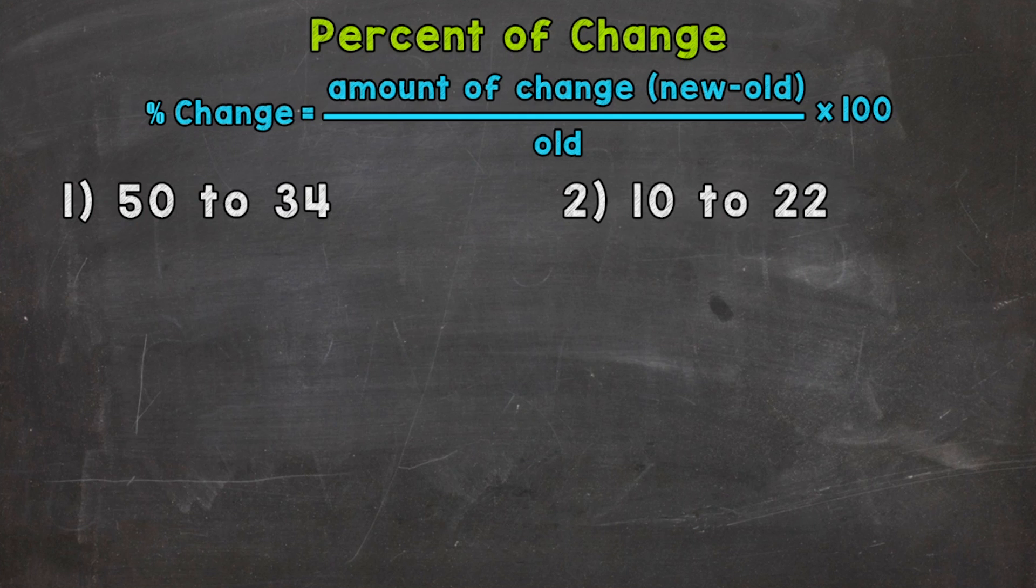So the first thing we need to do is calculate the amount of change. So the new number minus the old number will give us that. So the new number is 34 minus the old number of 50. So 34 minus 50 gives us a negative 16. Now that negative is important because it shows us that we have a decrease.